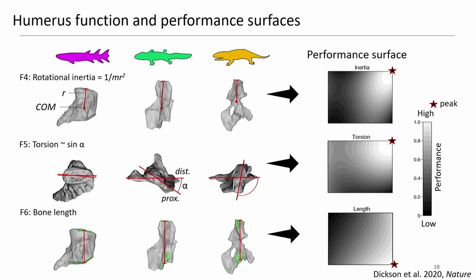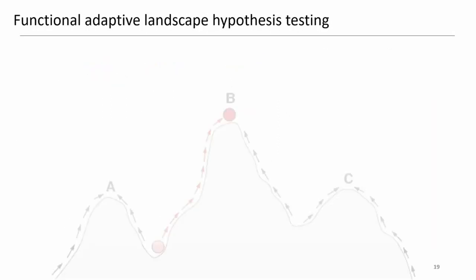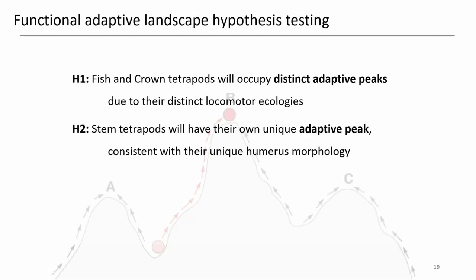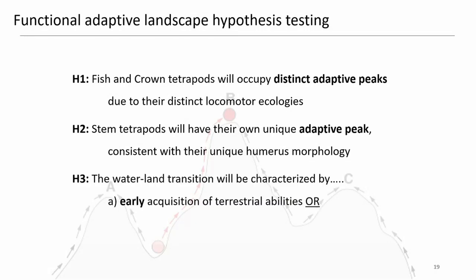We then took all six performance surfaces and combined them to create functional adaptive landscapes to test three hypotheses. Hypothesis one: fish and crown tetrapods will occupy distinct adaptive peaks due to their distinct locomotor ecologies — one swimming in water, one walking on land. Hypothesis two: stem tetrapods will have their own unique adaptive peak, consistent with their unique humerus morphology. Hypothesis three: the water-to-land transition will be characterized by either an early or a late acquisition of terrestrial abilities.